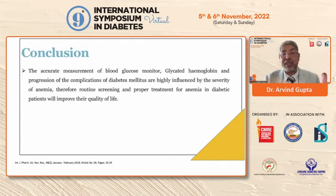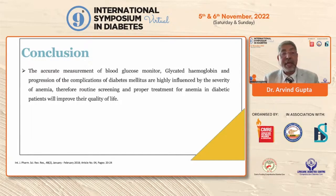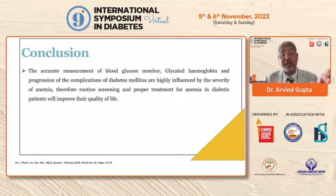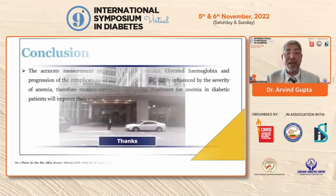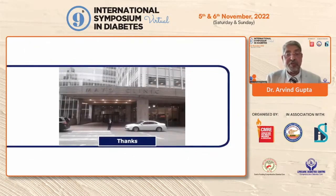Accurate measurement of blood sugar monitoring, glycated hemoglobin, and the progression of diabetes complications are highly influenced by the severity of anemia. Please treat and manage anemia in your diabetic patients. Routine screening and proper treatment of anemia in diabetic patients will improve their quality of life. Thank you very much for this opportunity.